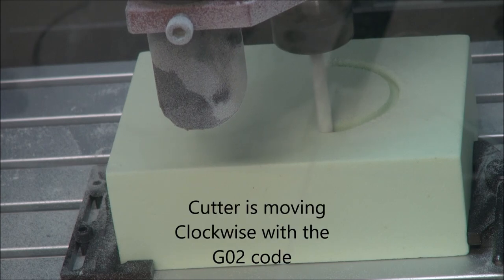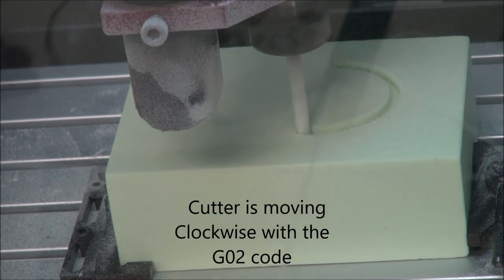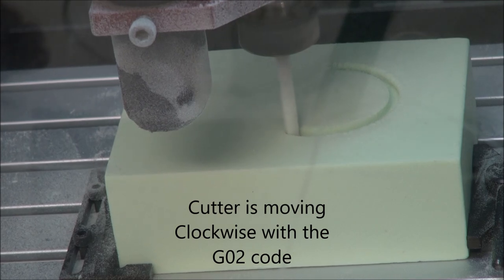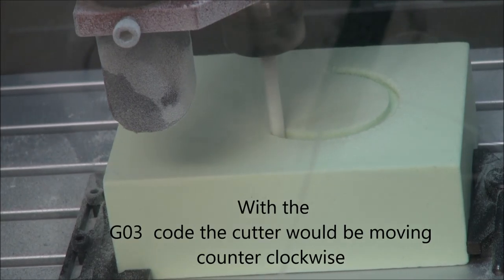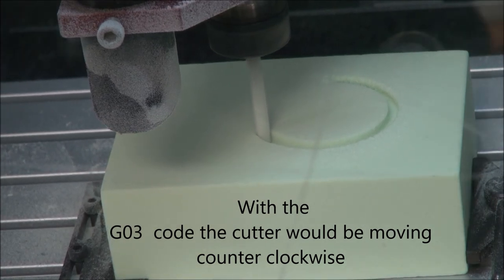Because the cutter would not know which way to go. At that point it's going to just go around. It starts at that point and goes back up to the top in a perfect circle. So this is using the G02 code which means cut clockwise.